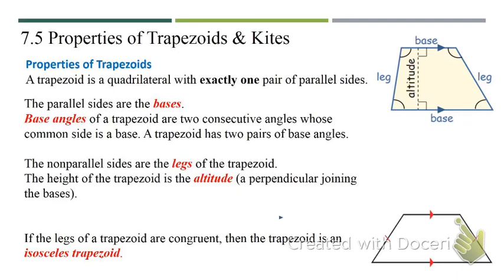As you can see, this is one pair of base angles, and then this is another pair of base angles. The non-parallel sides are the legs of the trapezoid. The height of the trapezoid is the altitude — a perpendicular joining the bases. If the legs of a trapezoid are congruent, then the trapezoid is an isosceles trapezoid, as you see in the figure to the right.